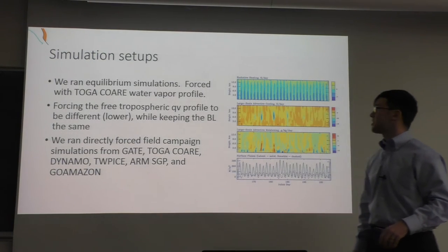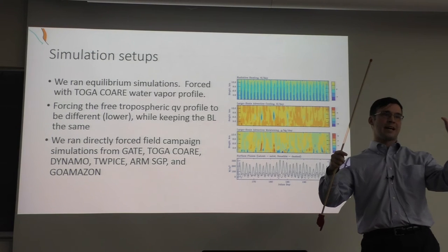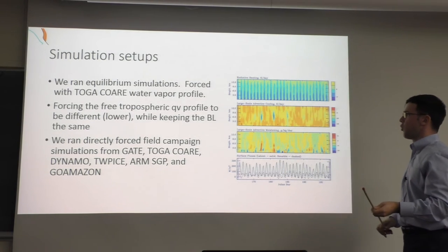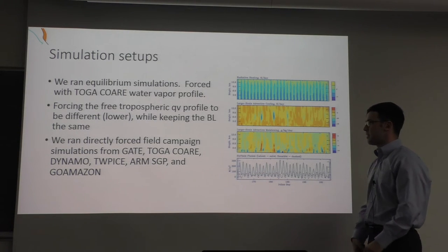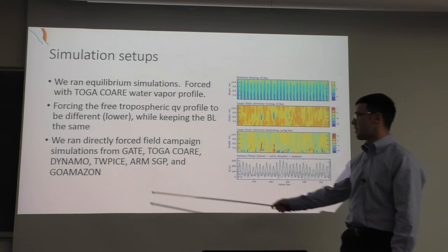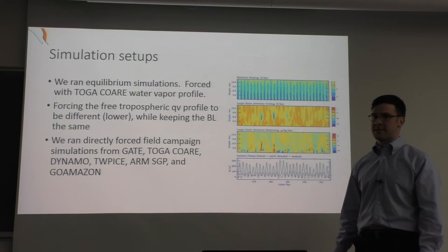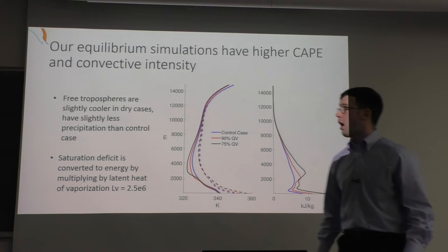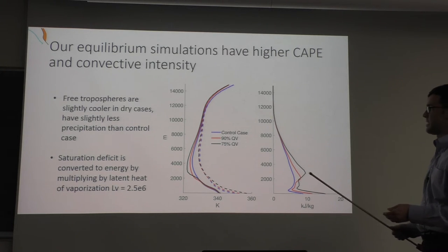Simulation setup: equilibrium simulations where I force the free-troposphere water vapor profile using TOGA COARE, using 90%, 75%, or 100% (control) of TOGA COARE's water vapor profile. We also use directly forced field campaign simulations from GATE, TOGA COARE, DYNAMO, TWP-ICE, ARM SGP, and GoAmazon. The first three are oceanic, TWP-ICE is over land and ocean, and ARM SGP (Oklahoma/Southern Kansas) and GoAmazon (Amazon) are land simulations.